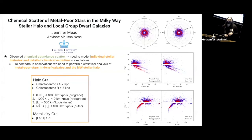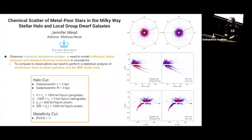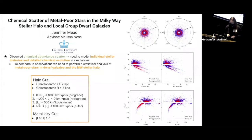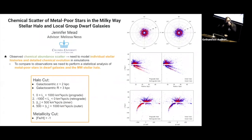In order to understand the origins of this scatter, we need to model individual stellar histories and detailed chemical evolution with cosmological simulations. To understand the results of these simulations, we need to compare them to observations — for which we have statistical analyses of metal-poor stars in dwarf galaxies and the Milky Way's halo. We have taken the APOGEE DR-16 data and made two cuts: the halo cut for our halo stars, and the metallicity cut for our metal-poor stars.